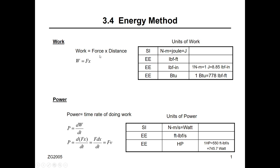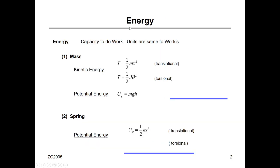Work is the force applied multiplied by the distance. Work is a form of energy, so the SI unit for work is a Newton-meter, or joule. Power is the time rate of change of doing work, so it's going to be Newton-meters per second. Now how can we define energy? Energy is the capacity to do work, and the units are the same as work.